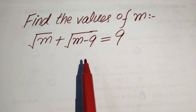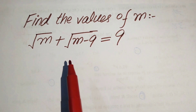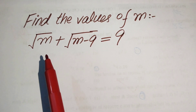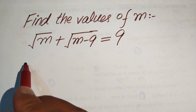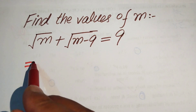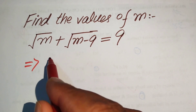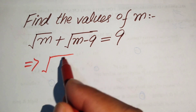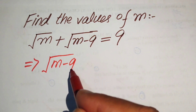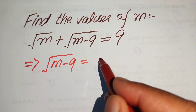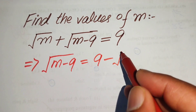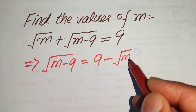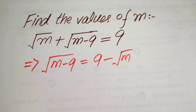The very first step we are going to do is move the plus square root of m to the right hand side, so it is written as square root of m minus 9 equals 9 minus square root of m.